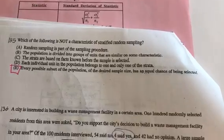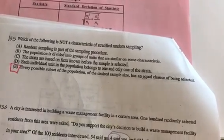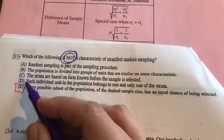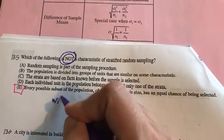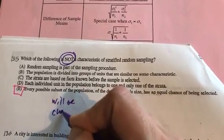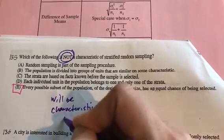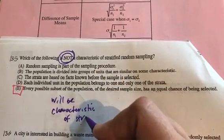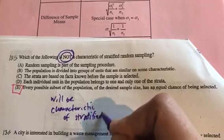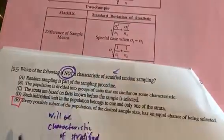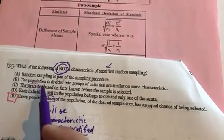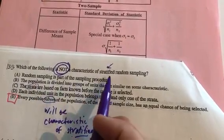I got this answer, 135, so let's go ahead and explain it. So right off the bat, it says the word not. That means that four of these will be characteristics of a stratified random sample.